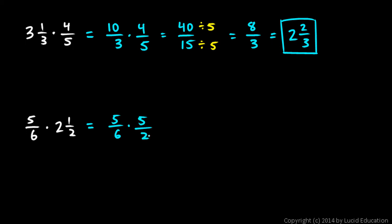So 5 sixths times 5 halves. And then multiply the numerators, that gives me 25 up here, and multiply the denominators. 6 times 2 is 12, 25 twelfths. And once again, since we had the original problem stated as a mixed number here, or original problem involved a mixed number, we'll write the answer as a mixed number. This is 2 and 1 twelfth.